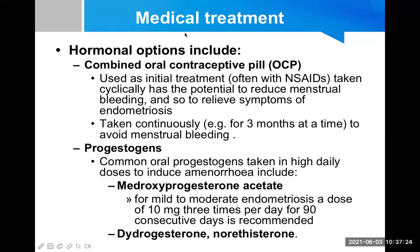The first hormonal option is the combined oral contraceptive pill, used as initial treatment often with NSAIDs to decrease pain. They are taken cyclically and have the potential to reduce menstrual bleeding and relieve symptoms of endometriosis. They can also be taken continuously for three months at a time to avoid menstrual bleeding altogether.